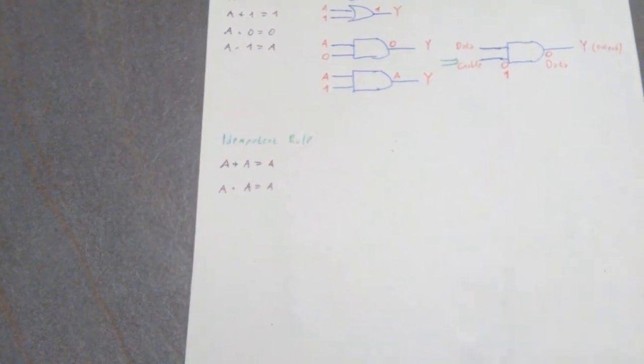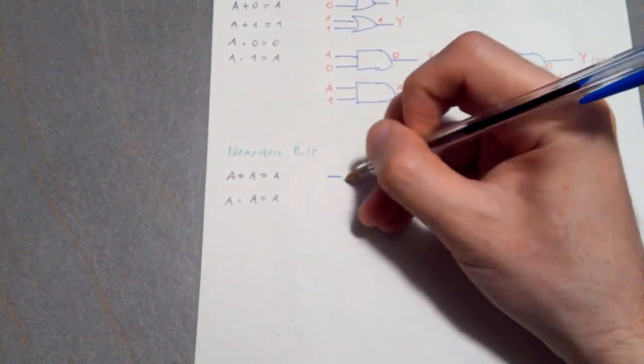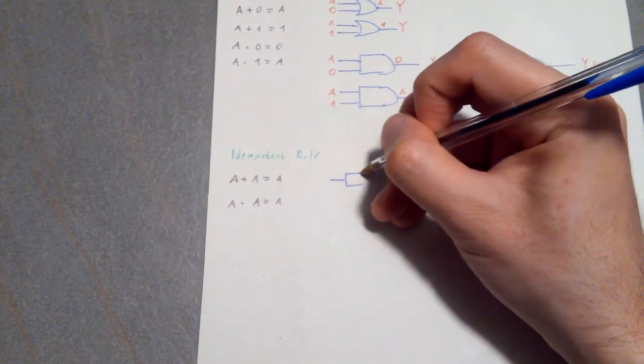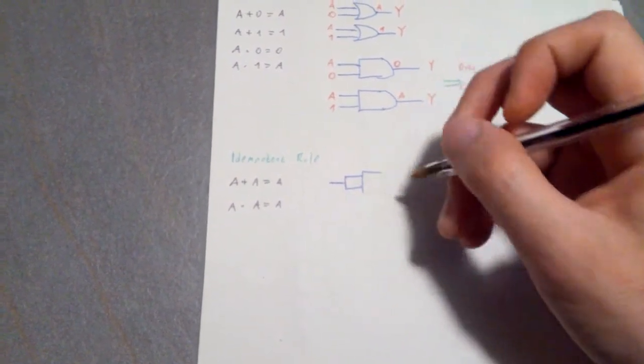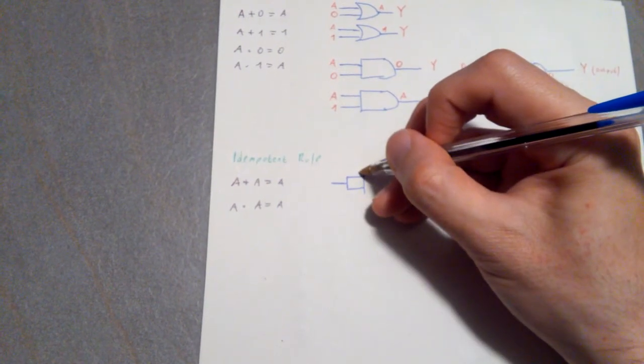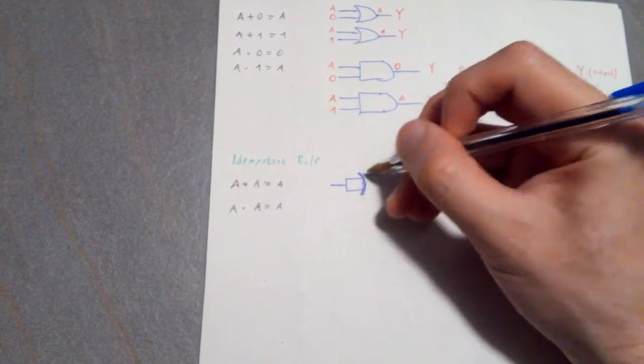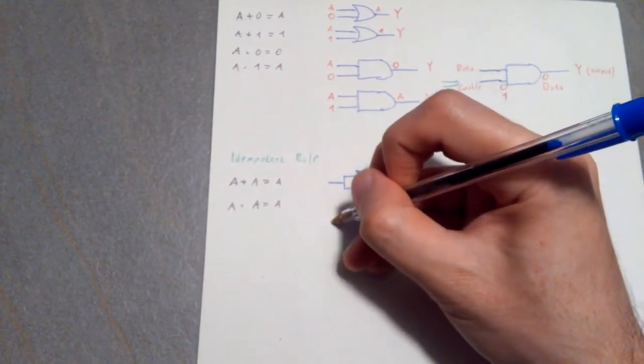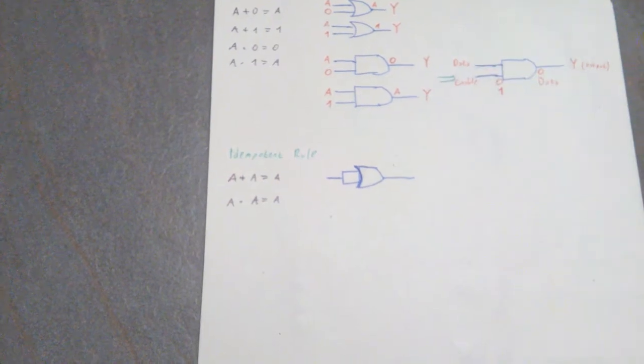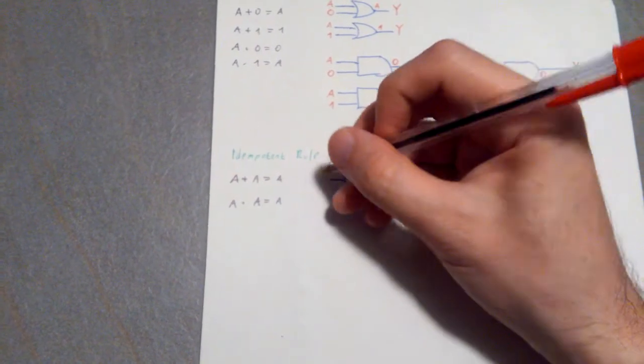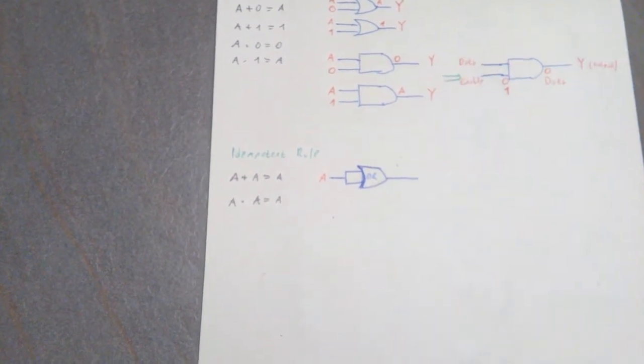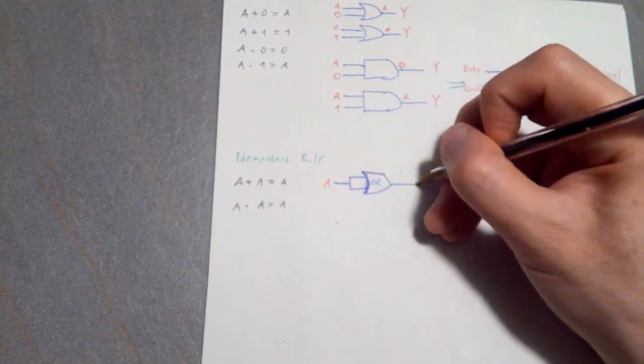So what they say is that if you have basically an input, which is A, and it's going to go through both your entries of your OR gate, then what's going to happen? Well, we have A, we have this OR gate, but the output is always going to be A.